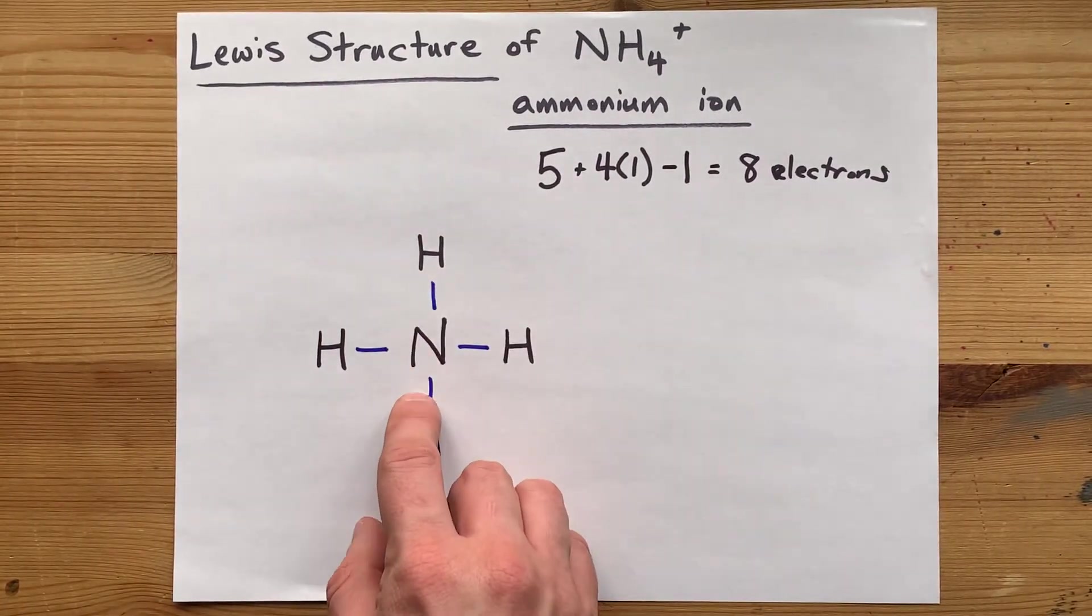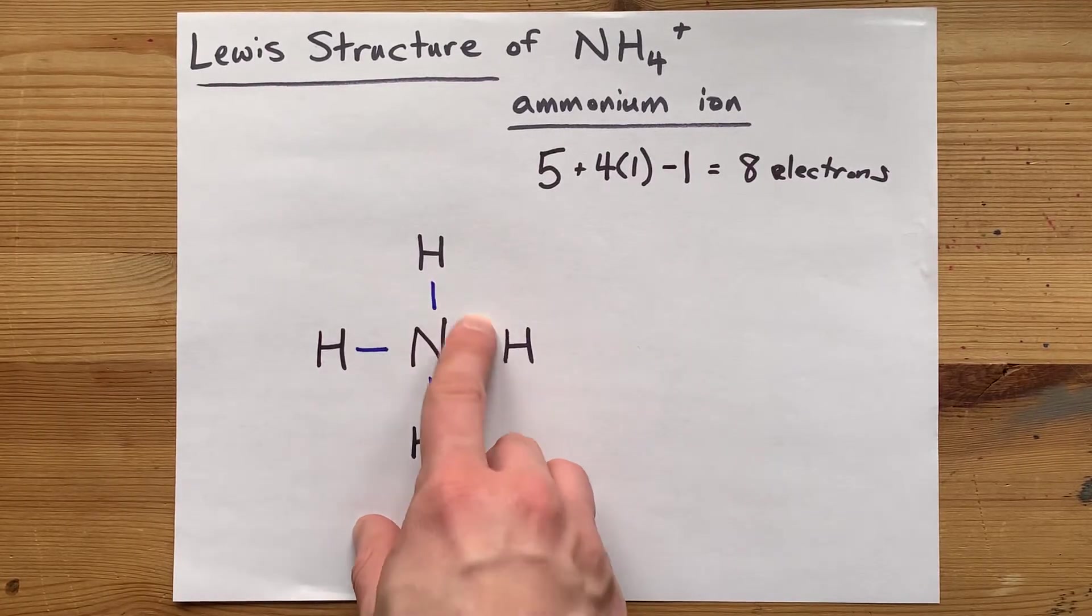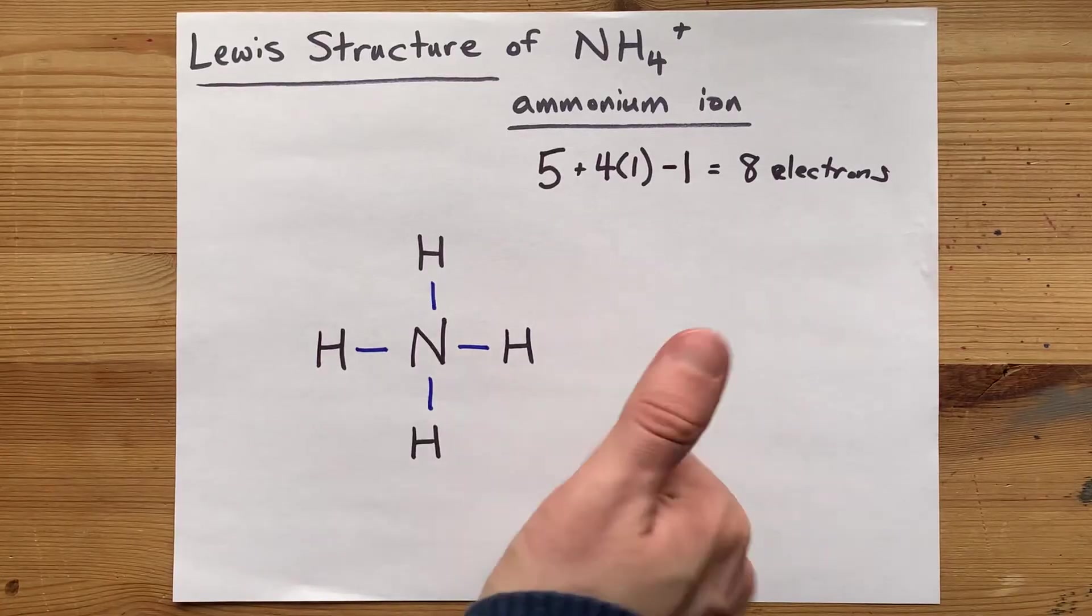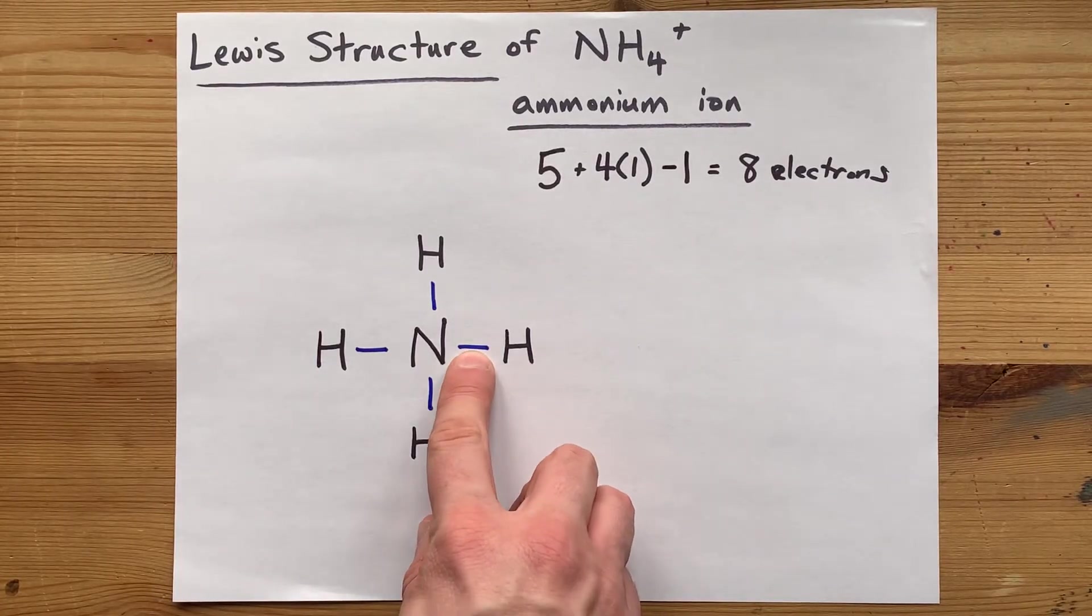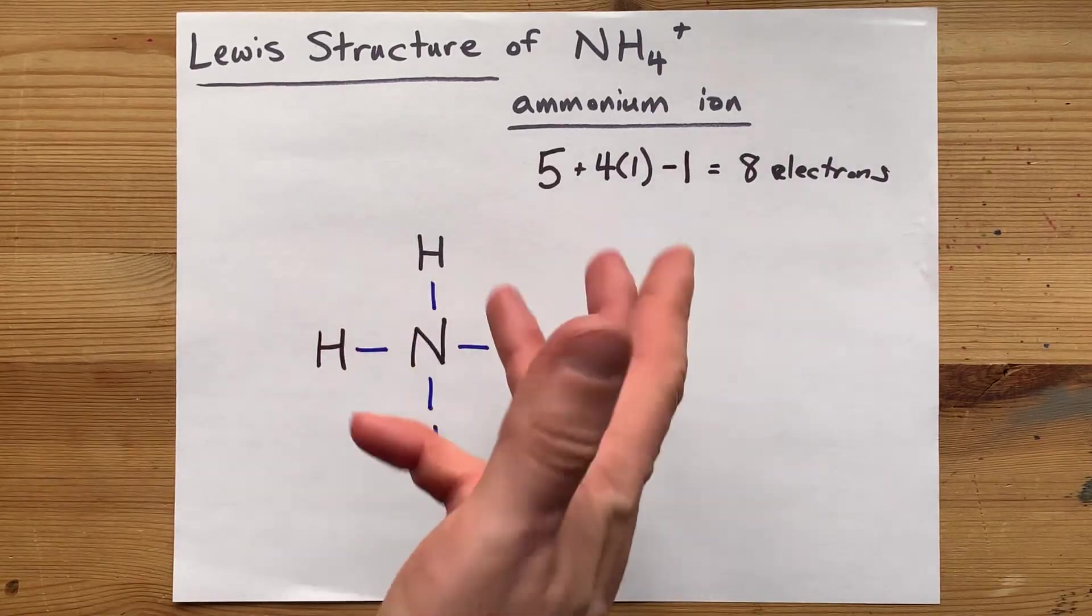And luckily, nitrogen has a complete octet. Two, four, six, eight electrons around it. That's stable. Hydrogen only needs two electrons around it to be stable, and so each of these hydrogens are also happy.